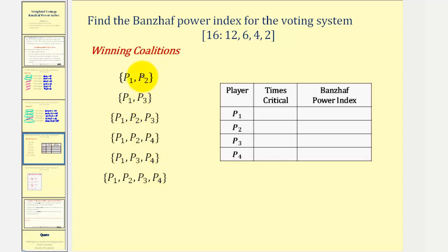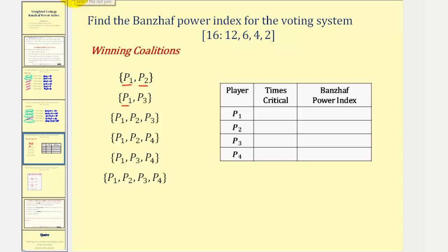Now we'll go through and determine which players are critical in each winning coalition. For player one and player two: if player one leaves the coalition, the weight is six, which doesn't meet quota — player one is critical. Underlining in red means it's critical. If player two leaves, the weight is twelve, which does not meet quota — player two is critical. Next, the winning coalition of player one and player three: if player one leaves, the remaining weight would be four — does not meet quota, so player one is critical again. If player three leaves, the weight would be twelve — does not meet quota, so player three is critical.